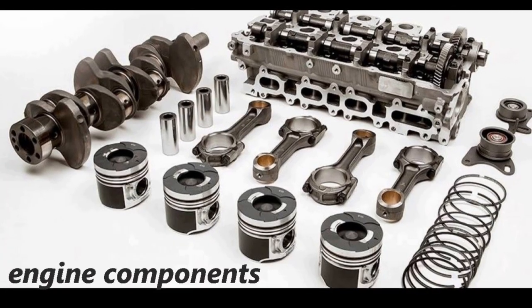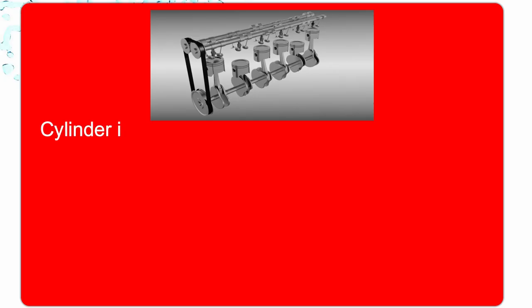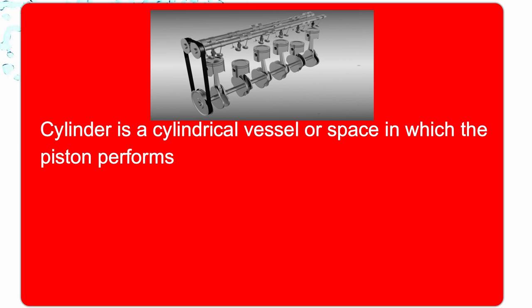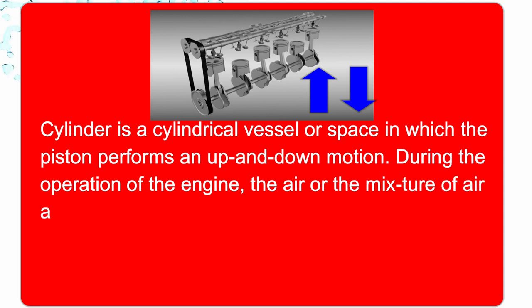Now let's discuss them in brief. The first component is cylinder. Cylinder is a cylindrical vessel or space in which the piston performs an up and down motion. During the operation of an engine, the air or the mixture of air and petrol fills up the volume in the cylinder.